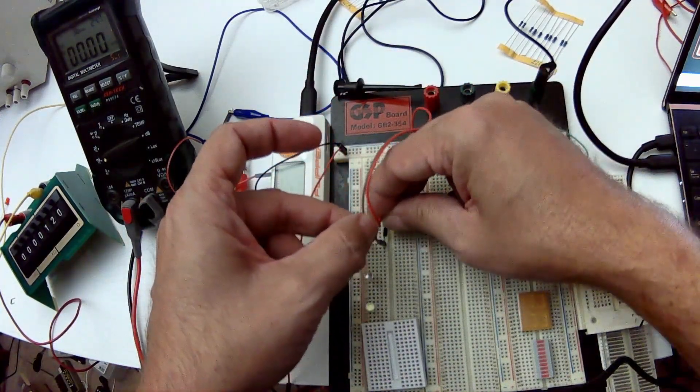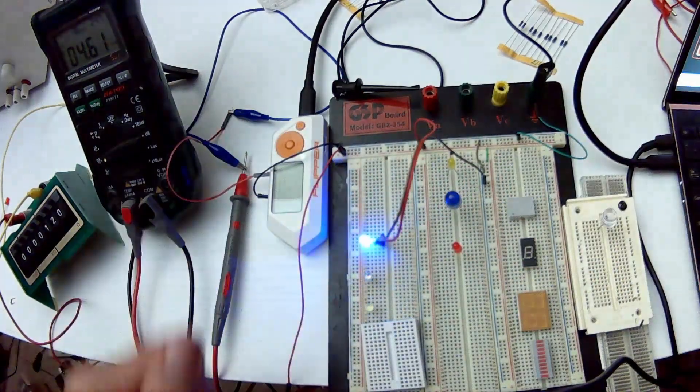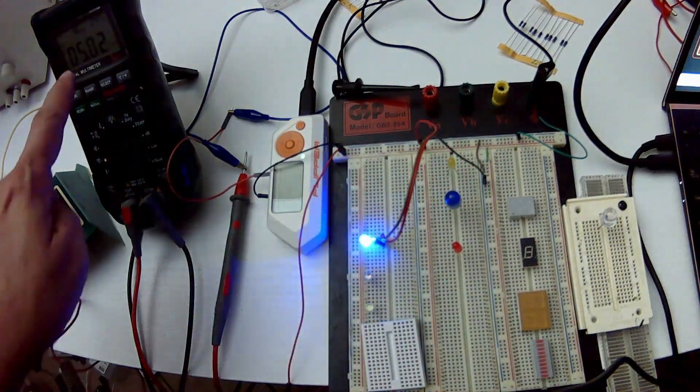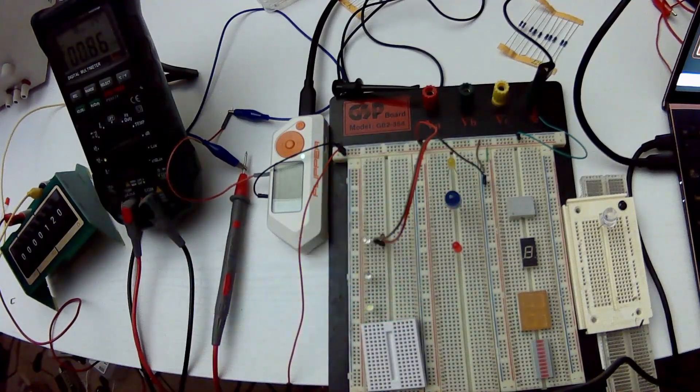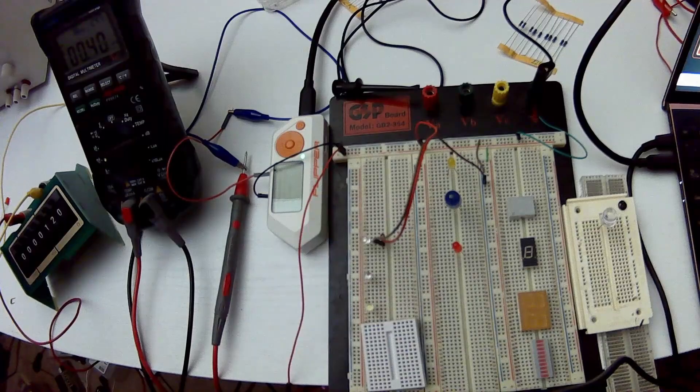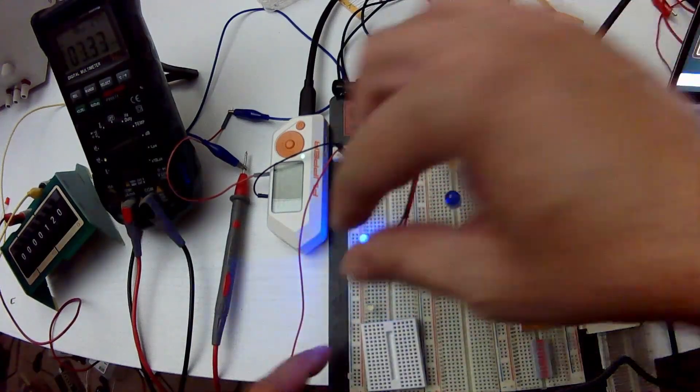Remember, LEDs do have a polarity. So it does matter which one goes to which one, depending on how you put in the LED. So this LED has all kinds of little blinky effects. And you can see the current jumps all over the place as well as it does its effects.